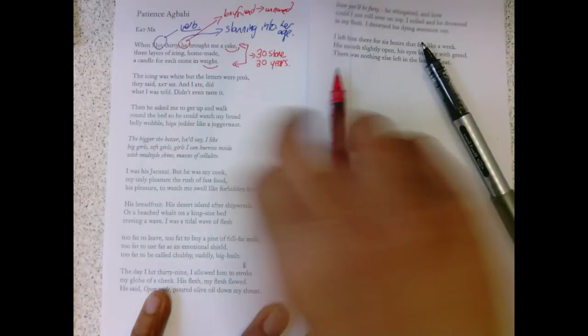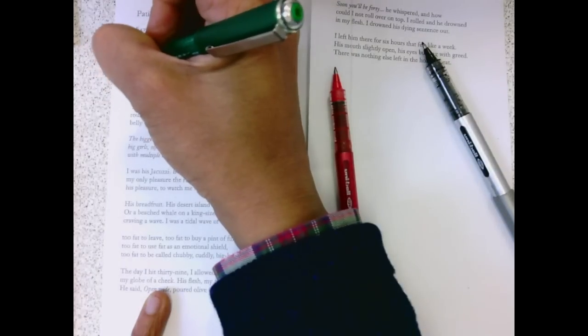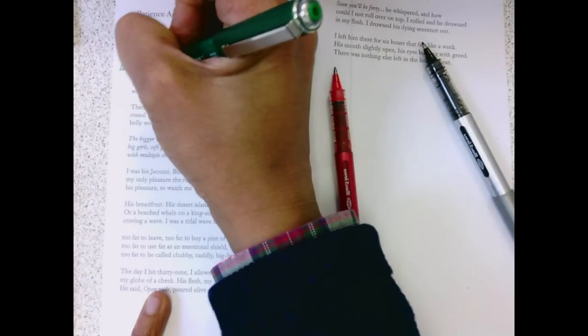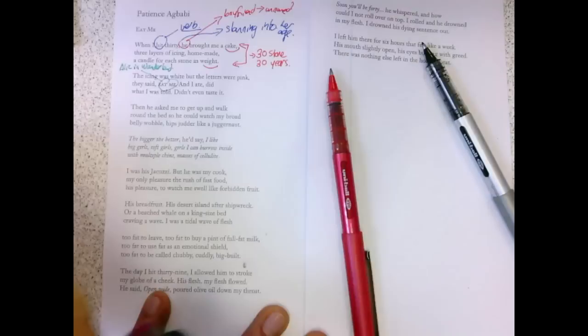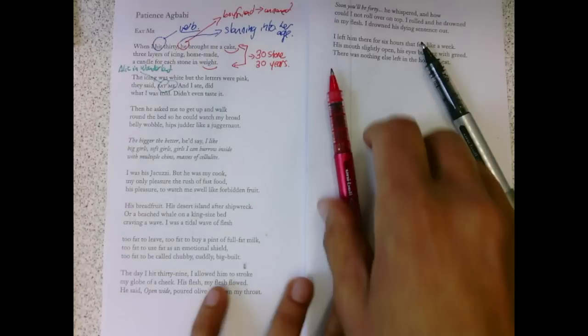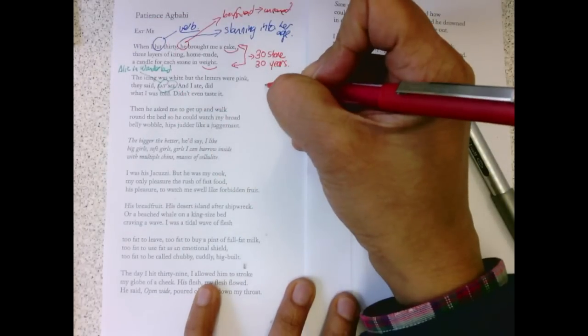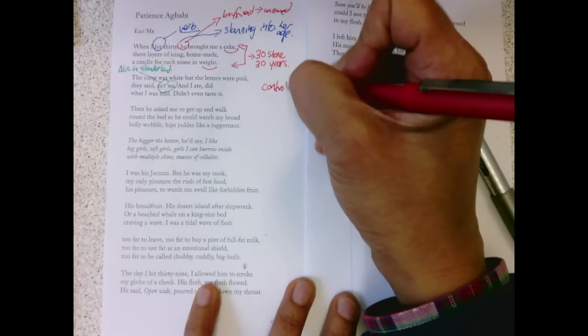Eat me, of course, is that reference to Alice in Wonderland. Alice ate something and she shrunk, she drank something and she blew up. Here we get that idea as well, that food is something that controls women.